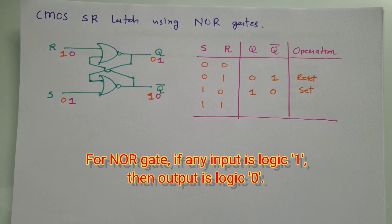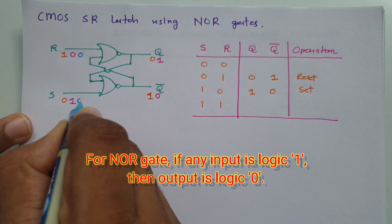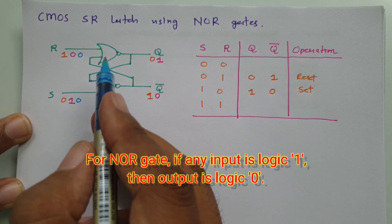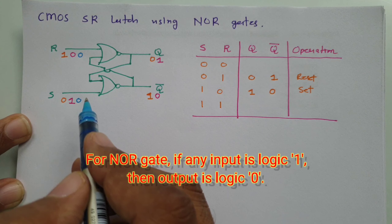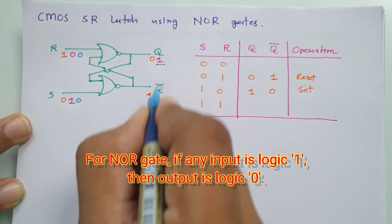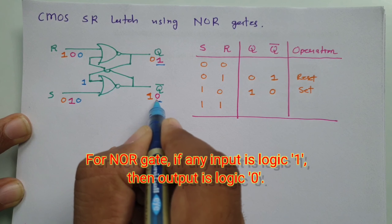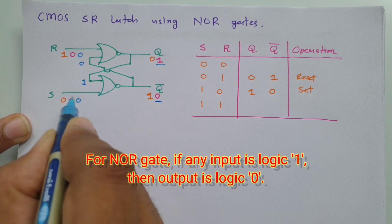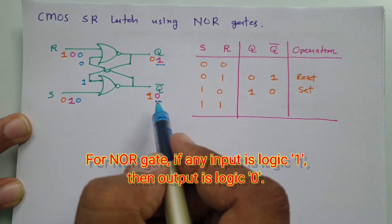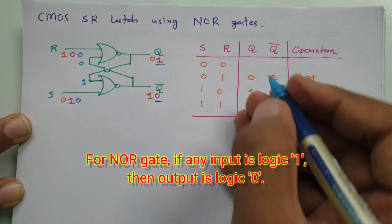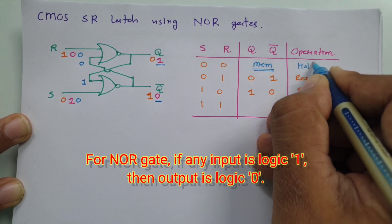Now consider the third case: S=0 and R=0. The NOR gate output cannot be justified from inputs alone when both are 0, so we consider the previous output state. If previous output was Q=1 and Q-bar=0, the feedback keeps both outputs unchanged. Since the output is not changing, we say the circuit is holding the data — it works as memory, holding the previous state.